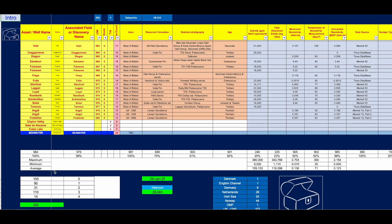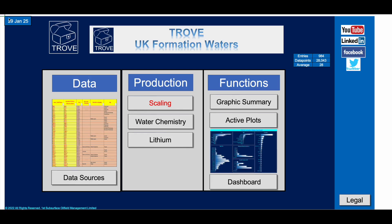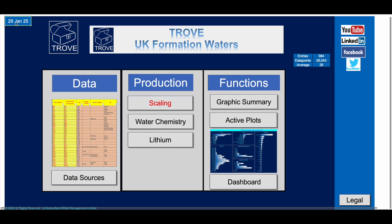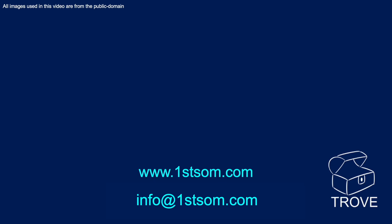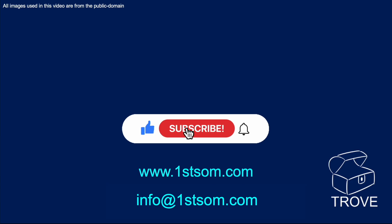It's a huge database — 984 entries with an average of about 28 measurements for each formation water. By far and away, we believe it's the largest formation water atlas that exists in and around the North Sea. If you'd like to find out more, please do get in touch. Thank you for watching — please hit like, subscribe, and ring the bell. Hope to see you back on our channel before too long. Bye for now.